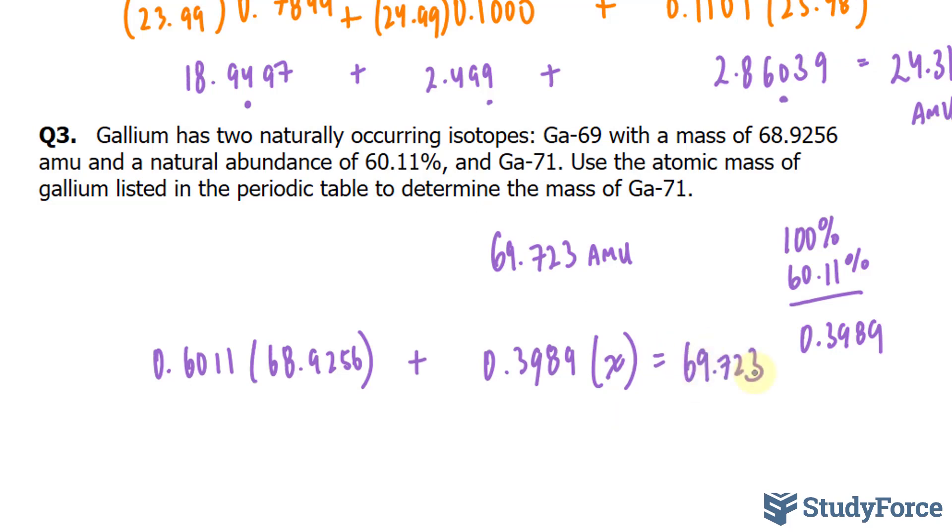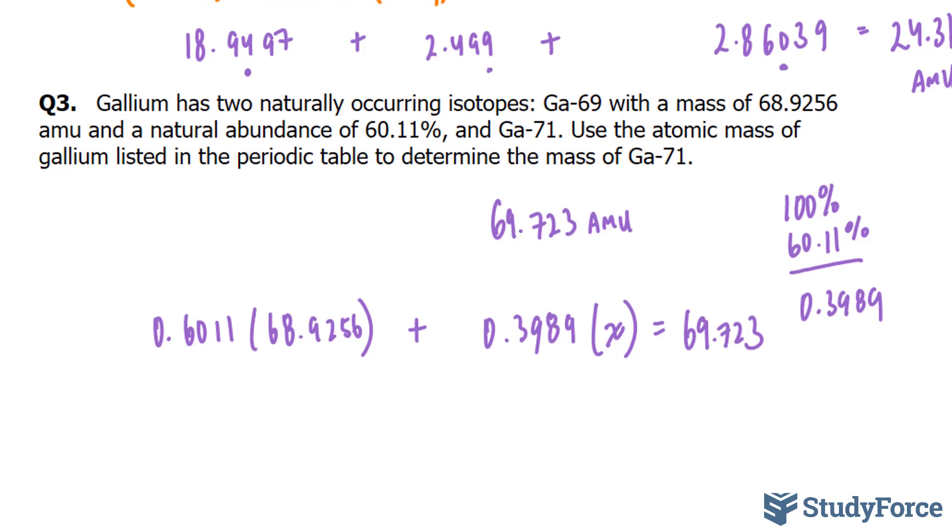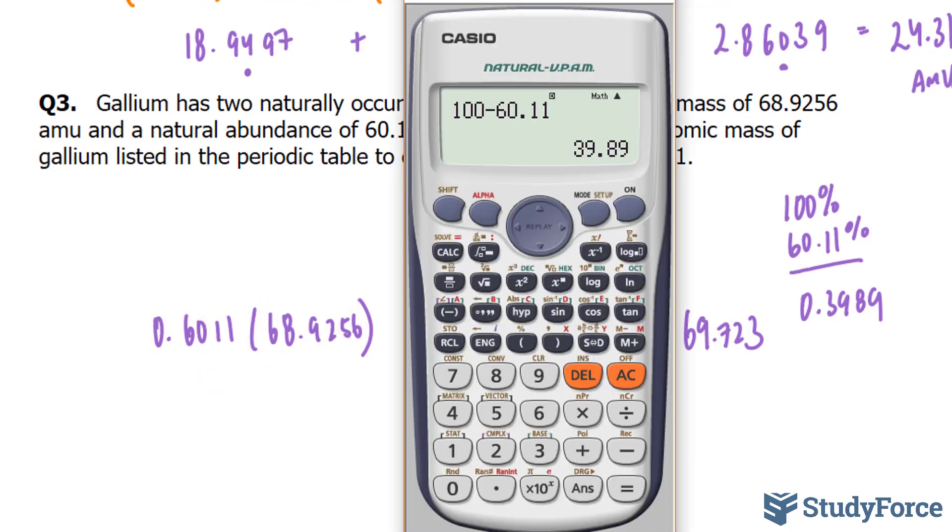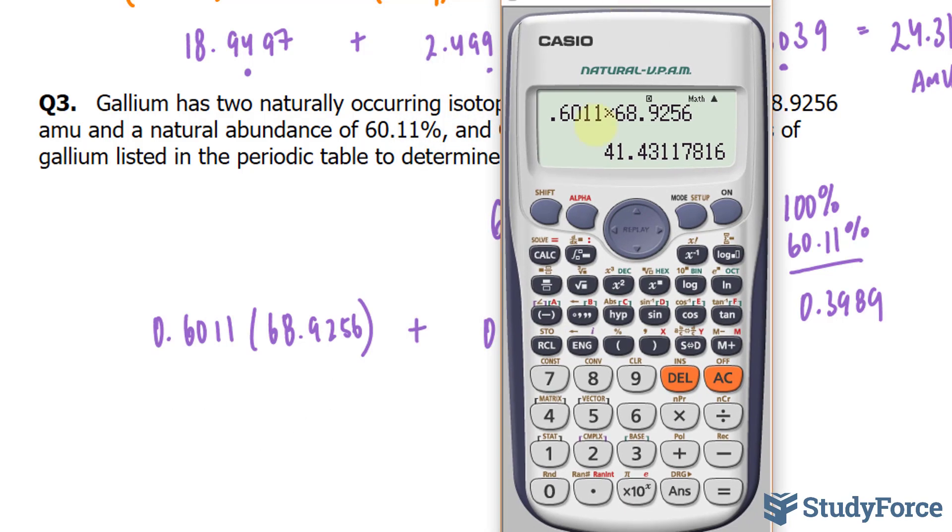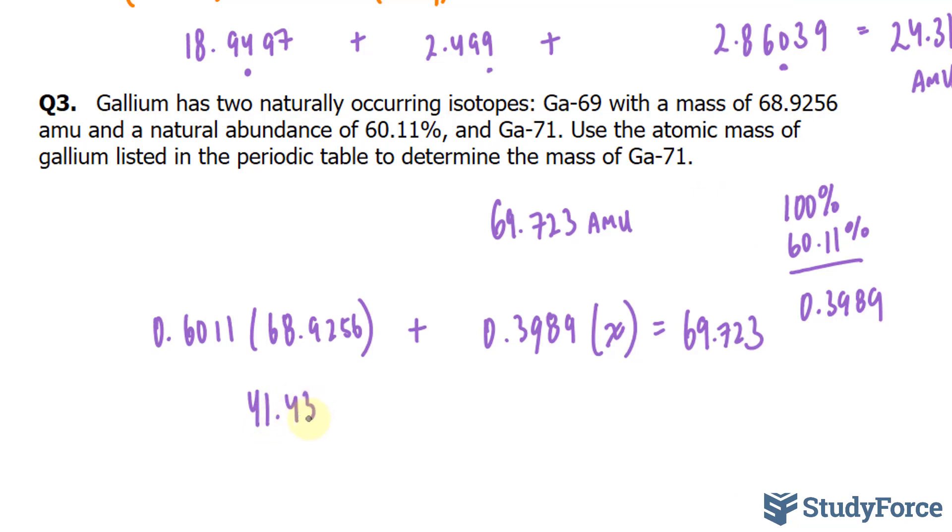Now keep in mind that we will be accounting for significant figures here. So when I multiply these two numbers, I should end up with a number that has four significant figures. 0.6011 times 68.9256, that gives me this number. And keep in mind that we have to have four significant figures, although there are so many numbers here. We will write down up until four numbers after the decimal, just for good measure, because we can't start rounding off numbers if there are more calculations underway.